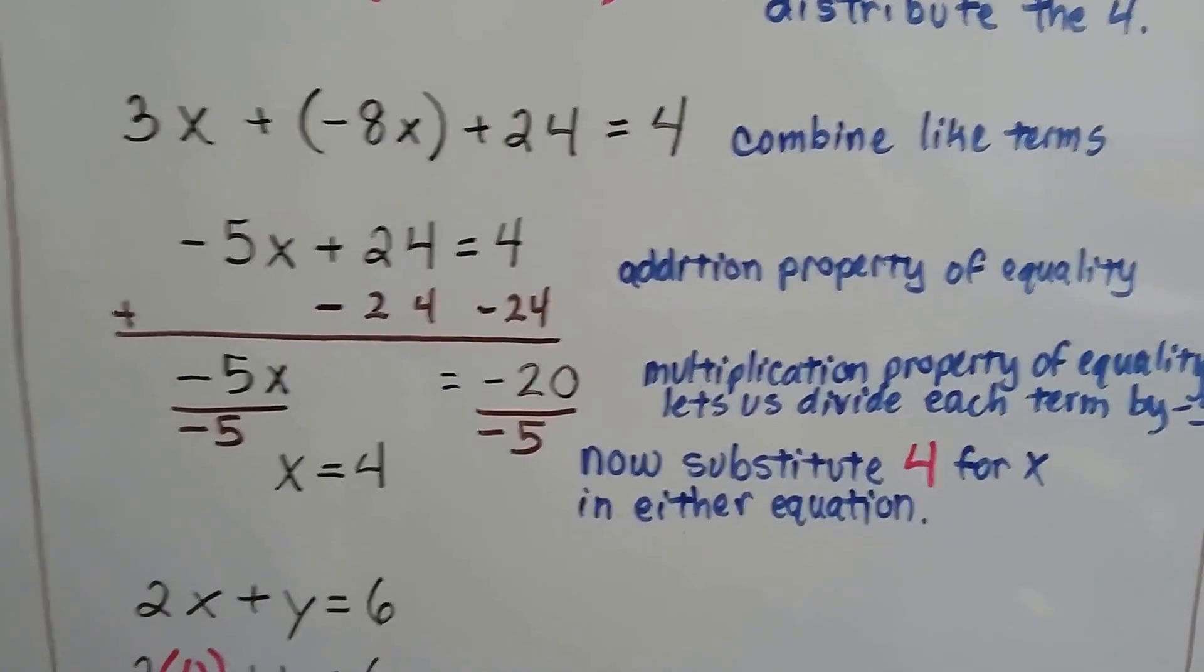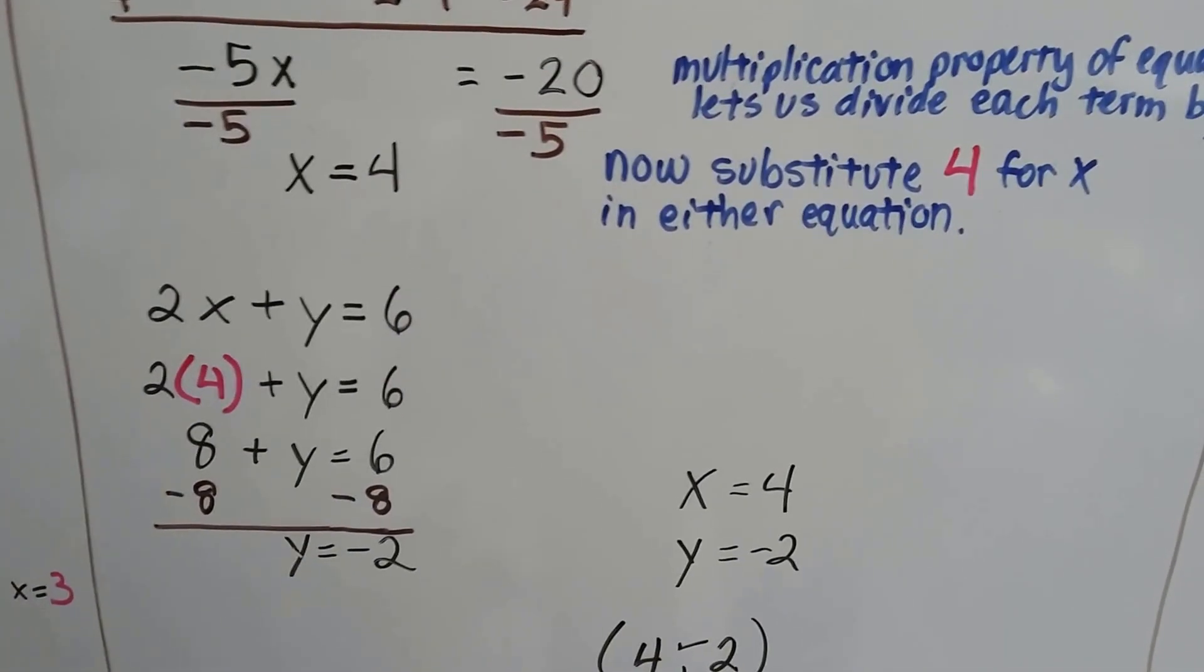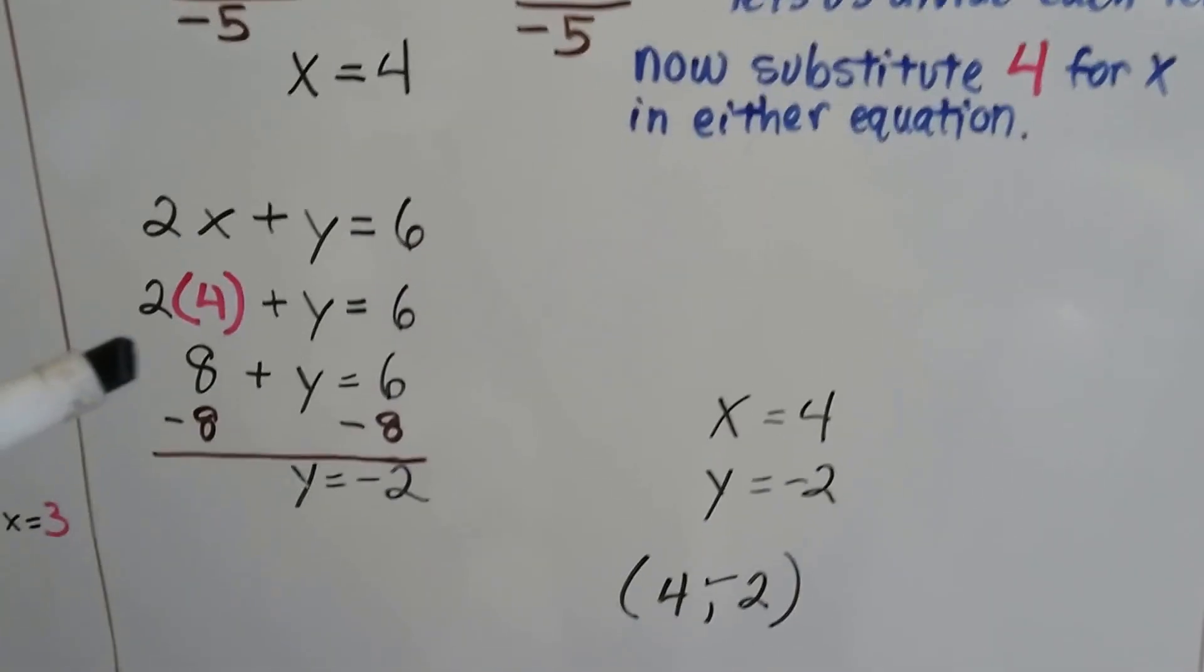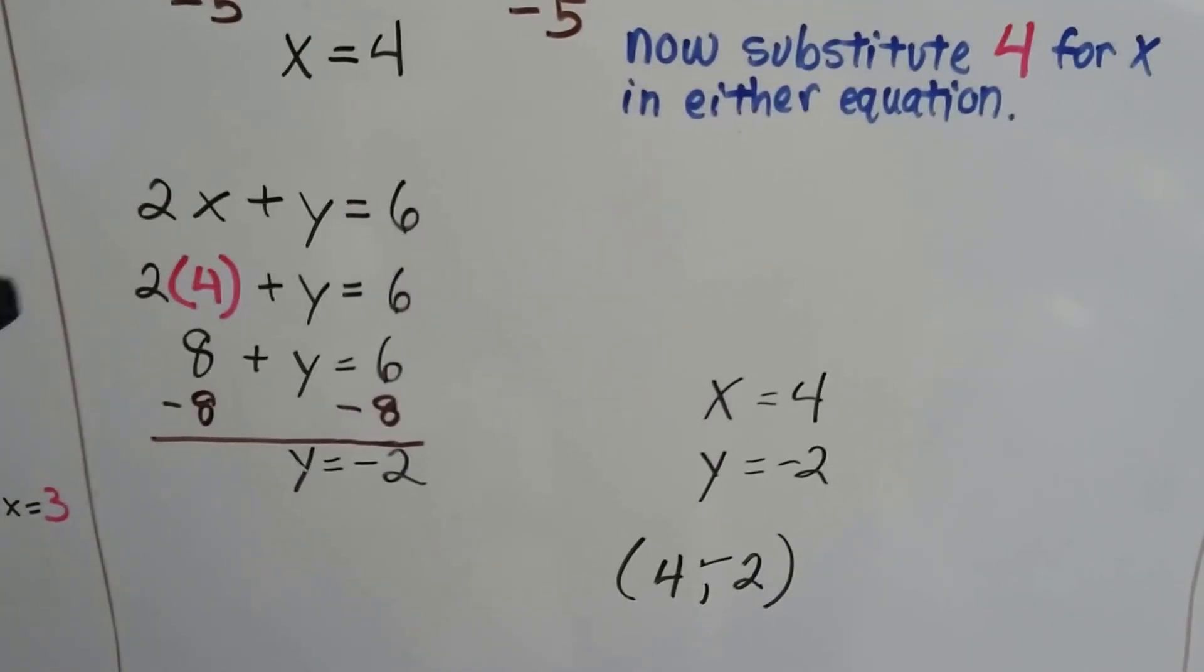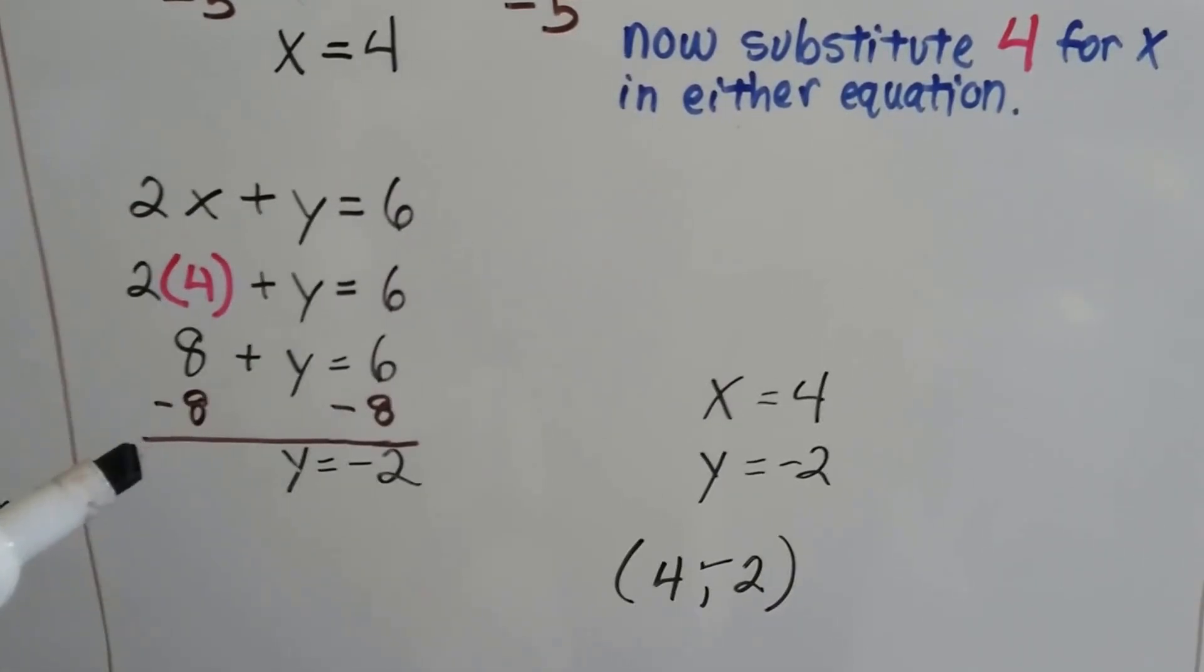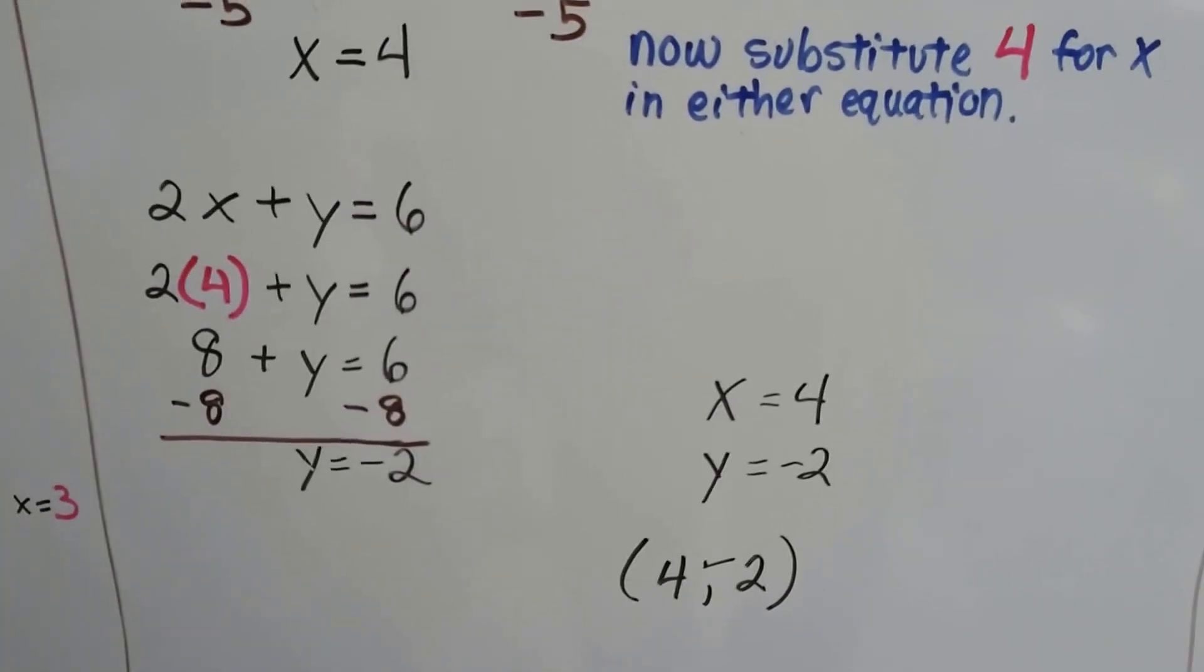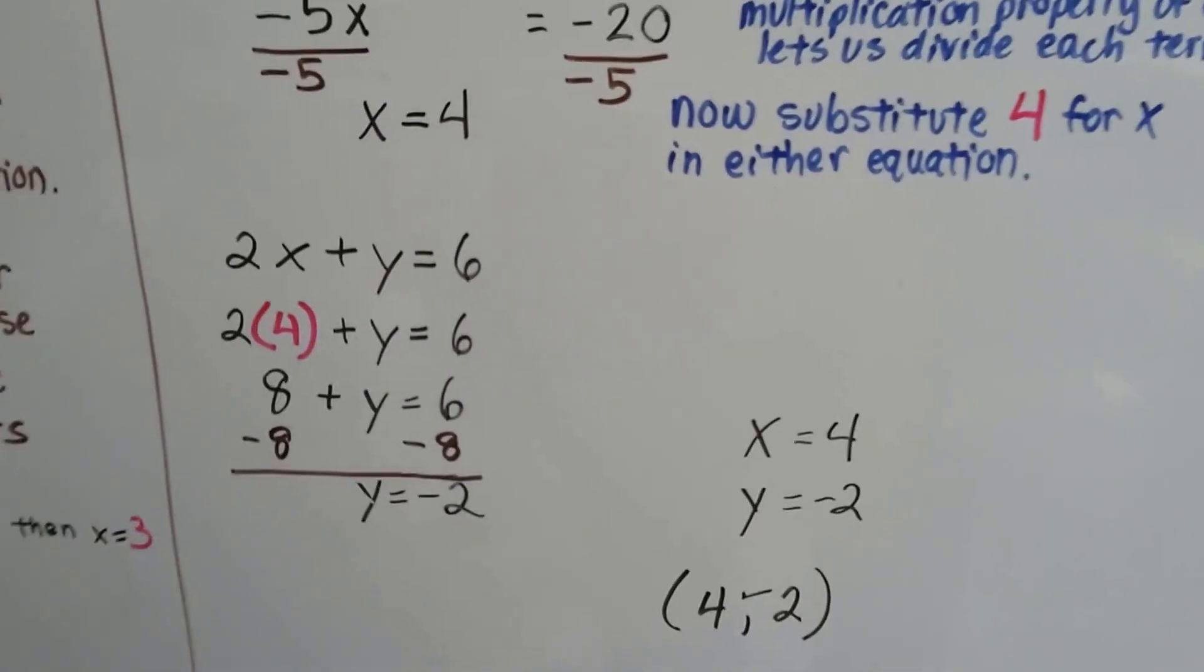Now we're not done. Now we're going to substitute that positive 4 for x in one of the equations. It doesn't matter which one we choose, whichever one we think would be easier to do. So I chose the first equation, 2x plus y equals 6. I'm going to plug this 4 in for the x. Now I can solve for y because I know what x is. And I get 2 times 4 plus y equals 6. So that's 8 plus y equals 6. Now all I have to do to isolate for the y is to create zero pairs. So I'm going to take this 8 away from each side and get y equals negative 2. So now I know that x is 4 and y is negative 2. And I've got my ordered pair and I've got my solution for the system of equations.